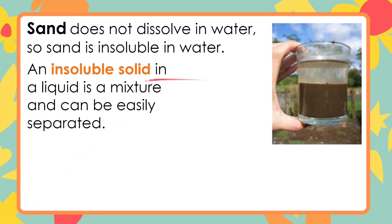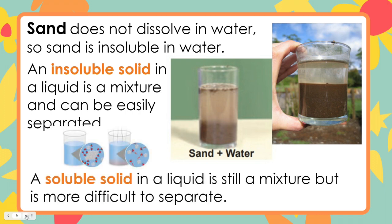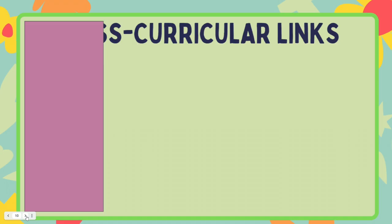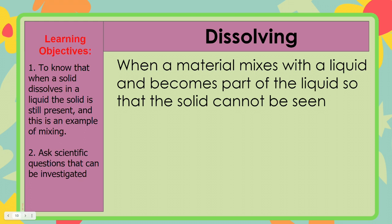An insoluble solid in a liquid is a mixture and can be easily separated — you can see this sand in a glass of water. A soluble solid in a liquid is still a mixture but is more difficult to separate. In this lesson, we are going to find out that in a mixture of a solid and a liquid, sometimes the solid dissolves. We are also going to record observations in tables and diagrams. Remember, dissolving is when a material mixes with a liquid and becomes part of the liquid so that the solid cannot be seen.